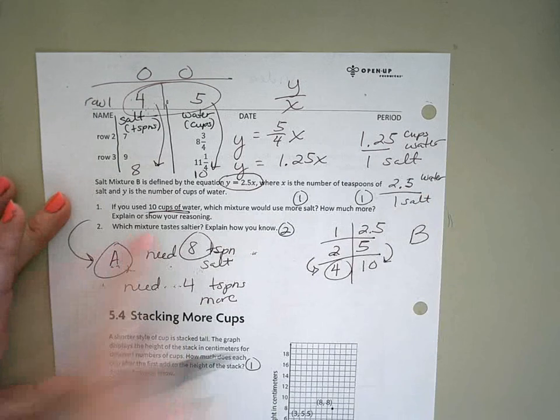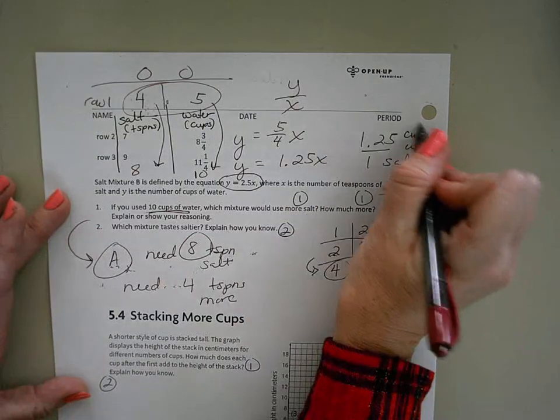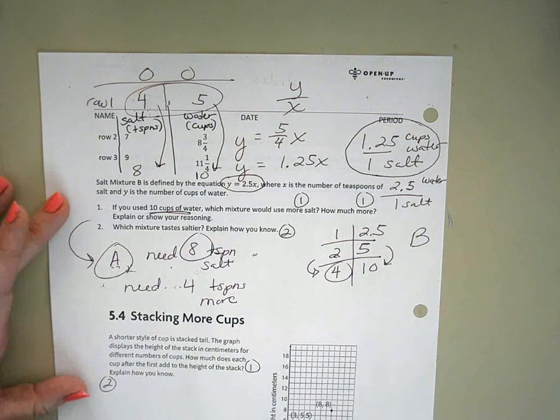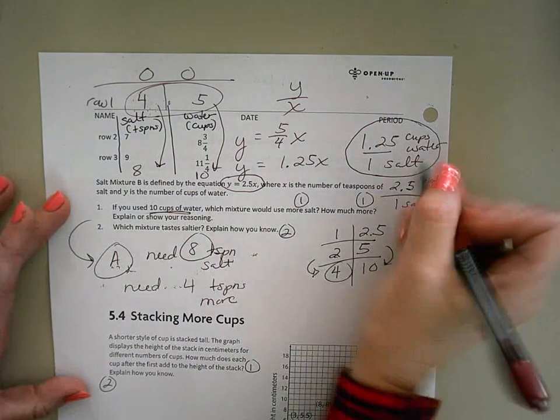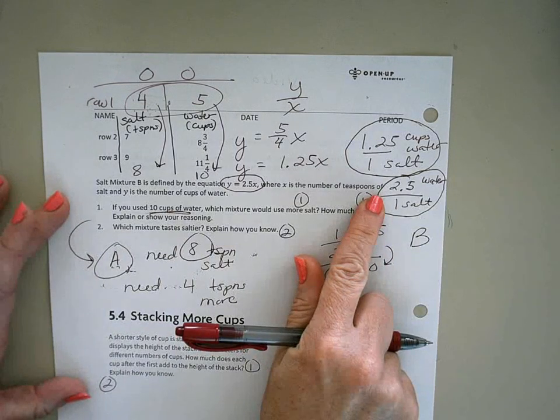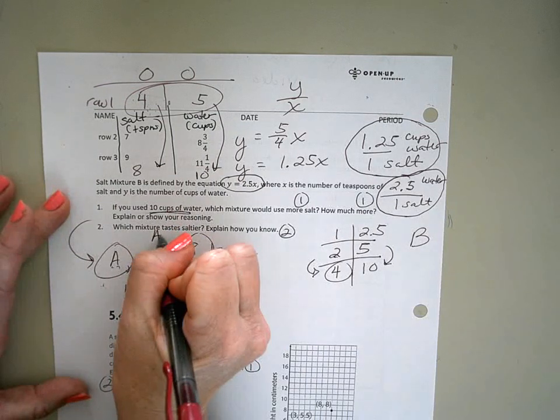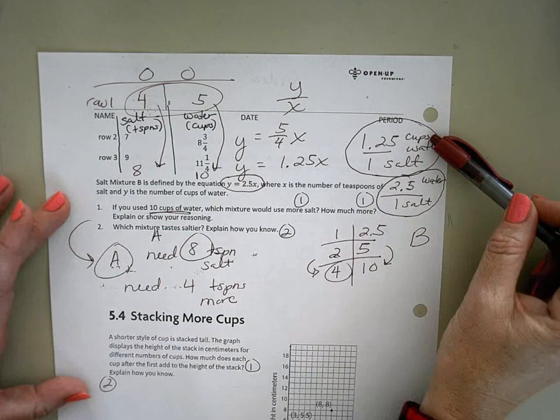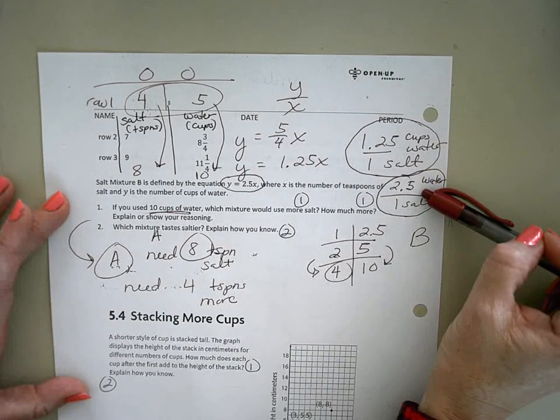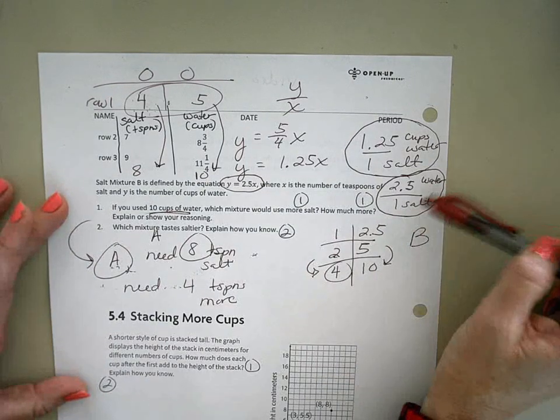So then, which mixture tastes saltier? Okay, mixture A has one teaspoon of salt and one and a quarter cups of water. So, salt mixture A is definitely going to taste saltier, because it uses less water for one teaspoon of salt. In mixture B, we're using double the amount of water for the teaspoon of salt, so it's going to be a more watered-down version.